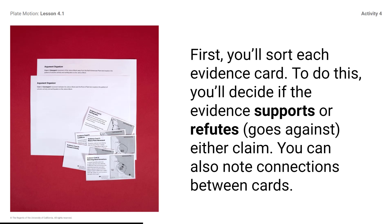First, you'll sort each evidence card. To do this, you'll decide if evidence supports or refutes either claim. You can also note connections between cards. If the evidence supports a claim, write 'supports claim 1' or 'supports claim 2' on that card. If the evidence card refutes a claim, write 'goes against claim 1' or 'goes against claim 2' on that card. If the evidence on one card connects with another, write 'connects with evidence card A, B, C, D, or E' on that card.